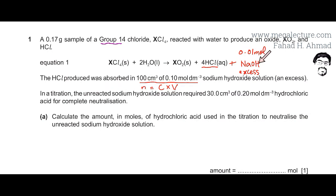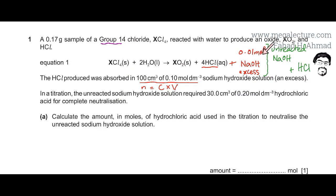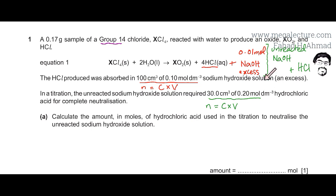In the next part, in a titration, the unreacted NaOH left over from the previous reaction required 30 cm³ of 0.2 mol per dm³ HCl for complete neutralization. This unreacted NaOH is now being reacted with HCl again, and we're given the volume and concentration of this HCl solution to work with.